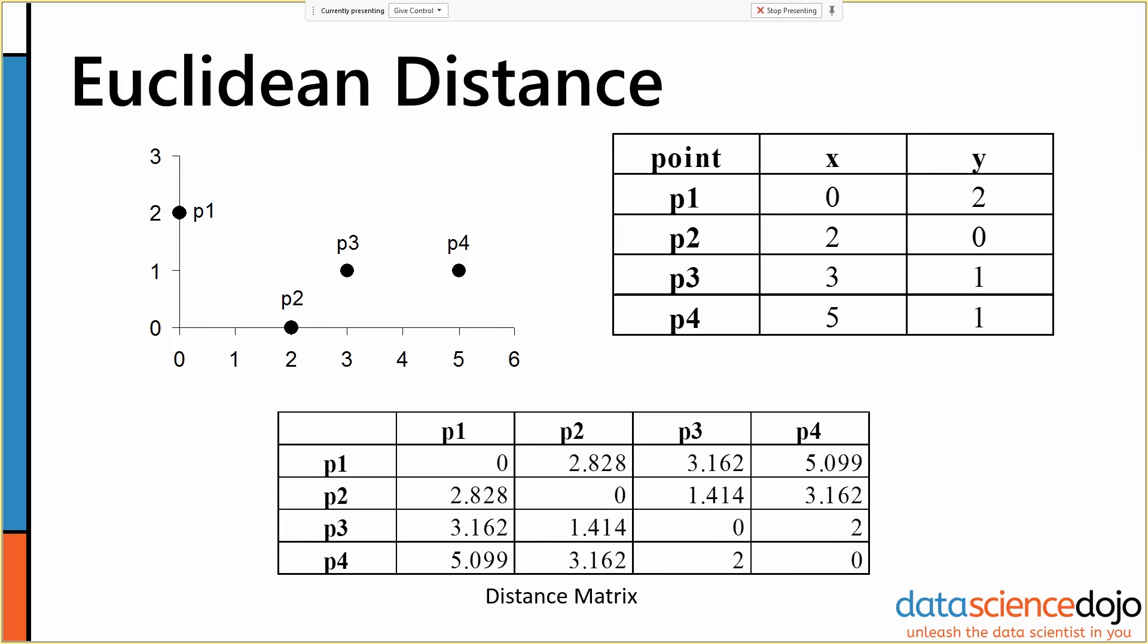So for instance, we have four points here at 0,2, 2,0, 3,1, and 5,1 that are all plotted at different points. And we can construct a distance matrix describing how dissimilar all of our points are.